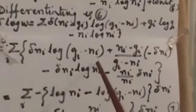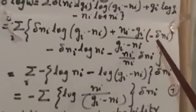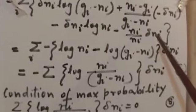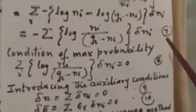So log W summation I, NI minus GI into log GI minus NI plus GI into log GI minus NI log NI plus a constant, that is equation number 6. Now differentiate equation 6. So we get delta log of this whole equation. After differentiation, summation I, delta NI log GI minus NI plus NI minus GI divided by GI minus NI into minus delta NI minus delta NI log NI minus NI by NI into delta NI. Now canceling some terms, we get minus log NI minus log GI minus NI into delta NI. Simplifying this, summation log NI in numerator and GI minus NI in denominator into delta NI, this is equation number 7.